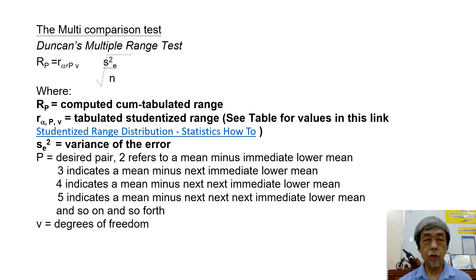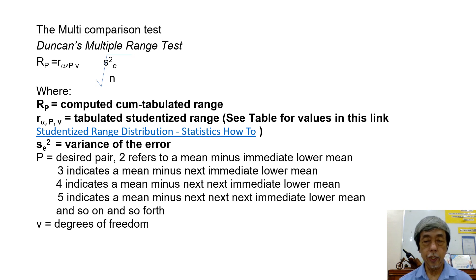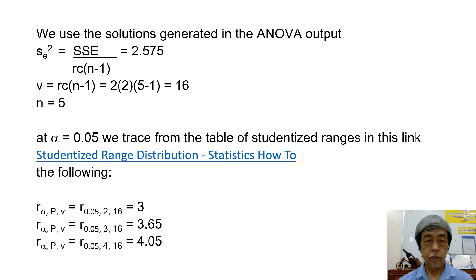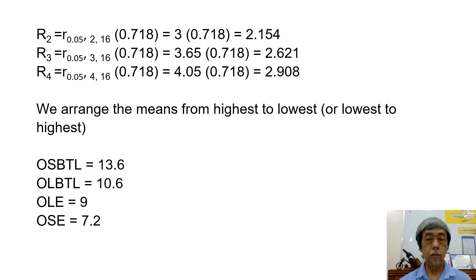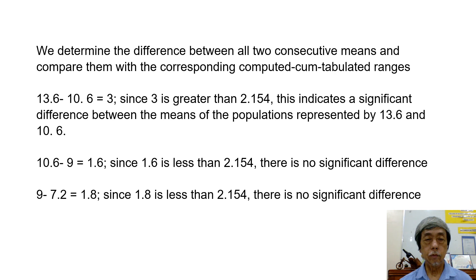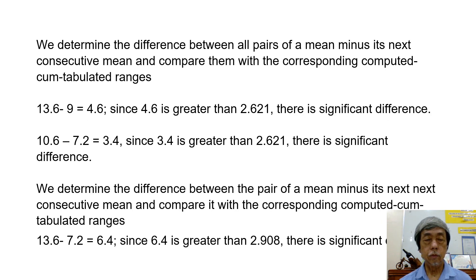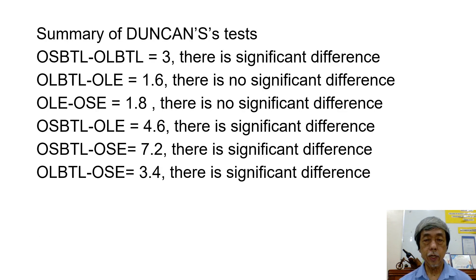We go next to Duncan's multiple range test. We need to find the value of the computed and tabulated range, as well as the tabulated studentized range, which can be searched in the link shown. We also need the value of the variance at the error, which can be located from the ANOVA Excel sheet. Finally, we have here the summary of Duncan's tests.